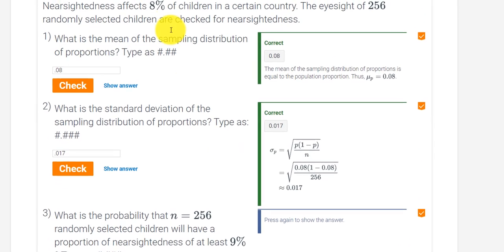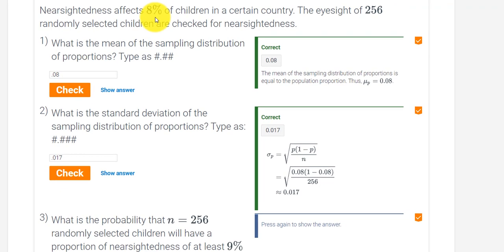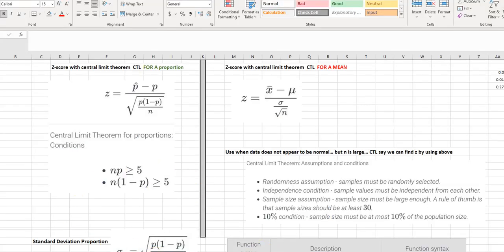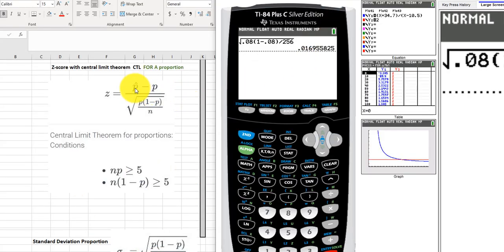Would be 0.09, right, the 9% minus the 8%, right, the 9% minus the 8%. And then we have to divide that by the standard deviation, which we know is 0.017. So let's pull out the calculator and do it. So p-hat minus p, that was the 0.09 minus 0.08.